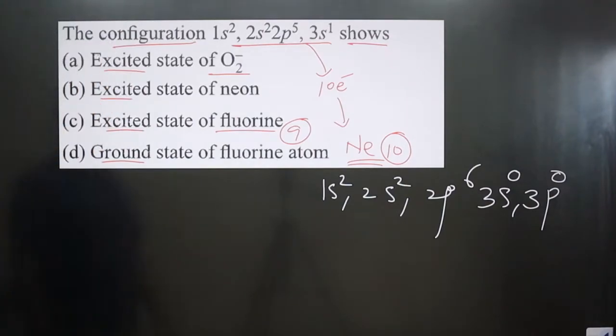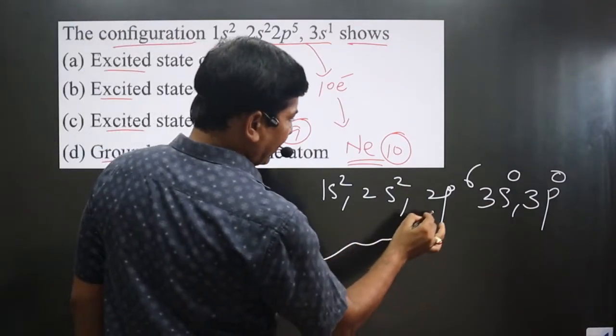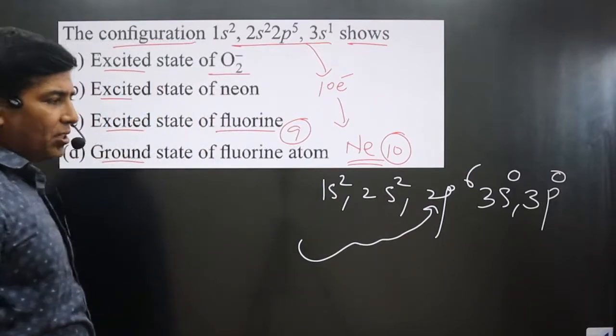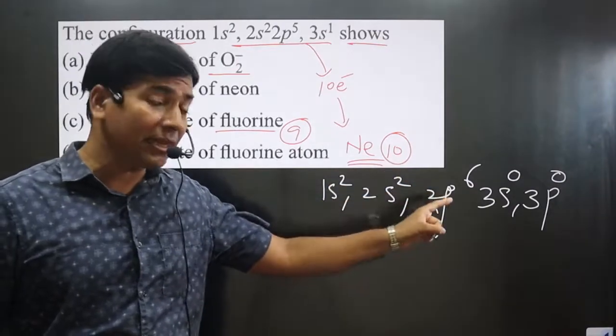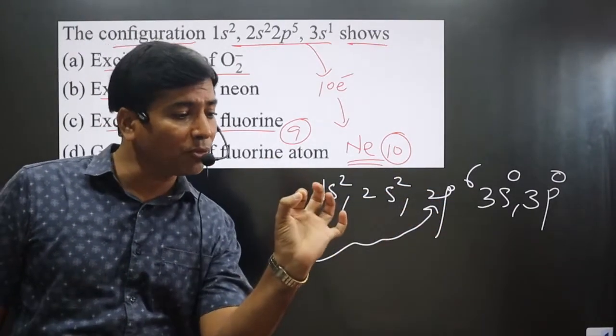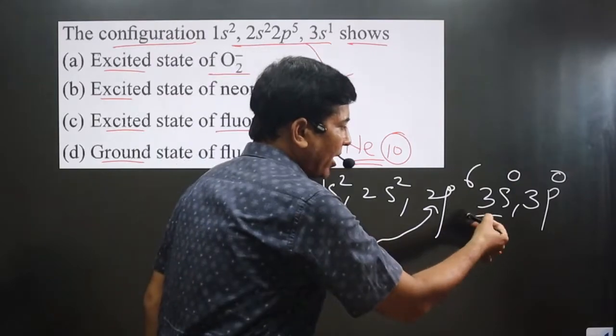If we supply energy from other resources to the outermost shell, the electrons present in the outermost shell will jump from lower orbit to higher orbit. This is the higher orbit, this is the lower orbit.